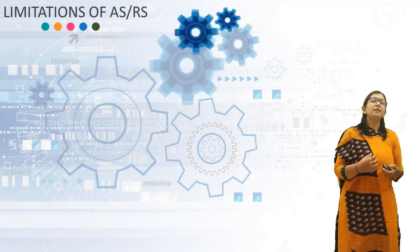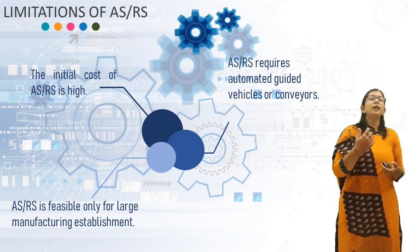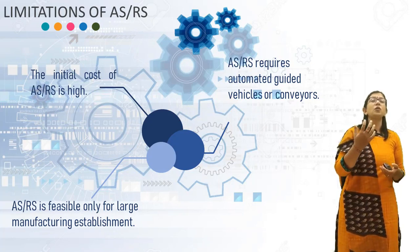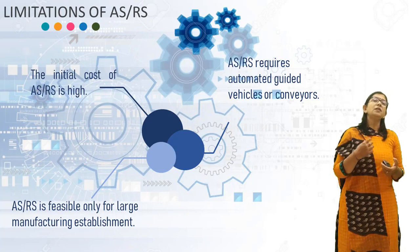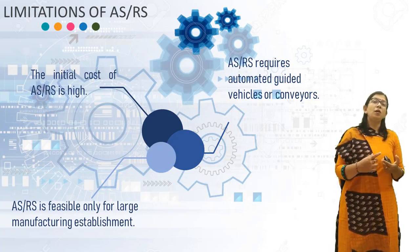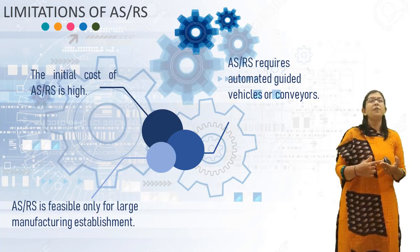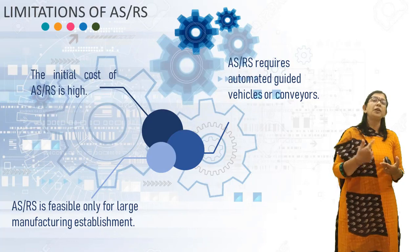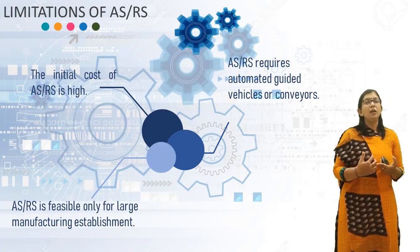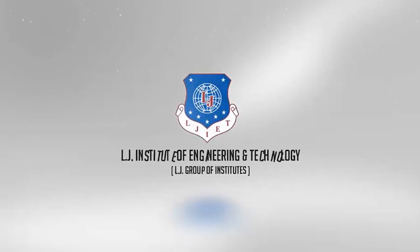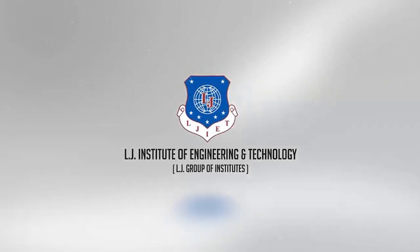Now, what are the limitations of ASRS? The initial cost of the ASRS is high. The ASRS system requires Automated Guided Vehicles or conveyors. It is feasible only for large manufacturing establishments. This concludes the lecture about Automated Guided Vehicles and Automated Storage and Retrieval System, which are used in automation for material movement and storing of materials. Thank you for watching this video.